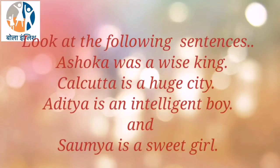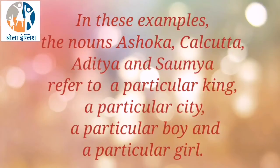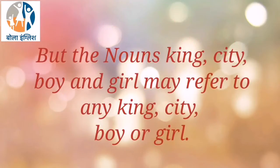Look at the following sentences. Ashoka was a wise king. Calcutta is a huge city. Aditya is an intelligent boy. And Saumya is a sweet girl. In these examples, the nouns Ashoka, Calcutta, Aditya and Saumya refer to a particular king, a particular city, a particular boy and a particular girl. But the nouns king, city, boy and girl may refer to any king, city, boy or girl.